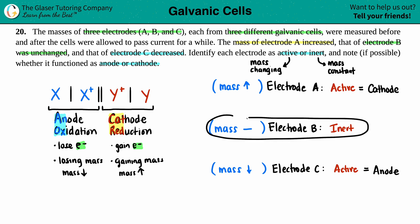Finally, since our inert electrode did not change mass, inert electrodes are a great thing because they can either work at the cathode or the anode. That's why they say 'note if possible whether it functioned as an anode.' An inert electrode can happen at the cathode and the anode. We do not know for certain from this example. And that is your final answer—all three of these things.